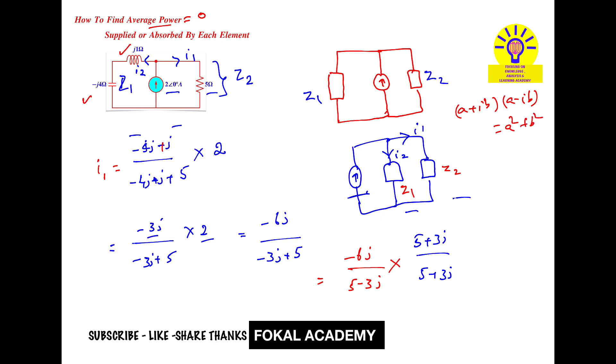So this is a and this is b. It becomes in the denominator 5 squared plus 3 squared. In the numerator, minus 6 into 5, nothing but minus 30, and J is there. Next minus 6 times 3 J, nothing but minus 18, and J into J is J squared which is minus 1, so minus minus becomes plus.